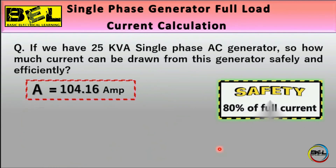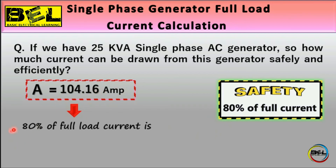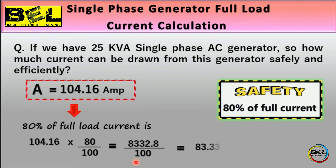For generator safety, we take 80% of the full load current. A link explaining power factor in detail is also available. The calculation is: 80% of 104.16 A = 104.16 × 80 / 100. Solving this gives 83.33 amperes. That is our safe operating current — if we apply this load level, the generator will work efficiently.